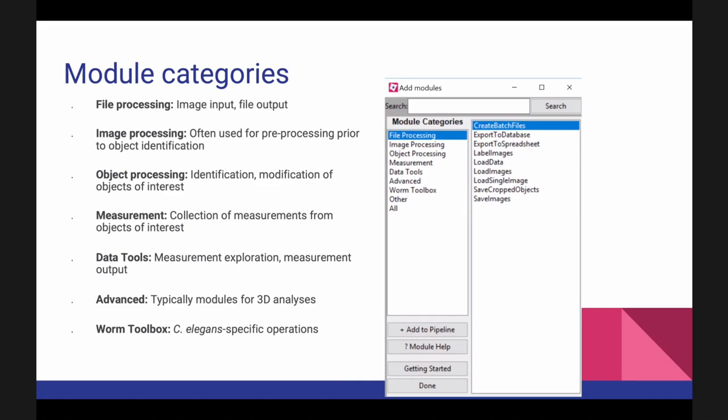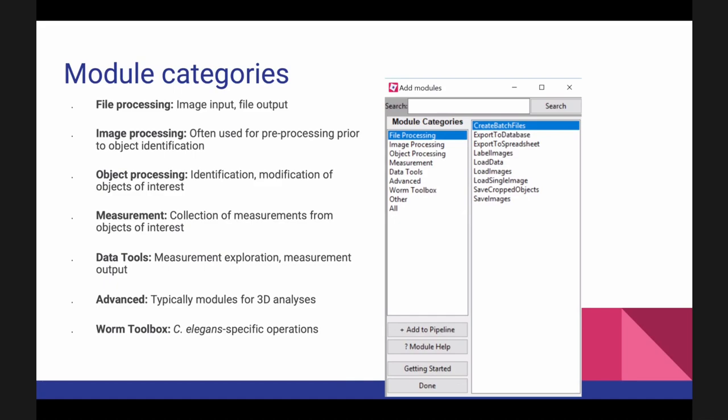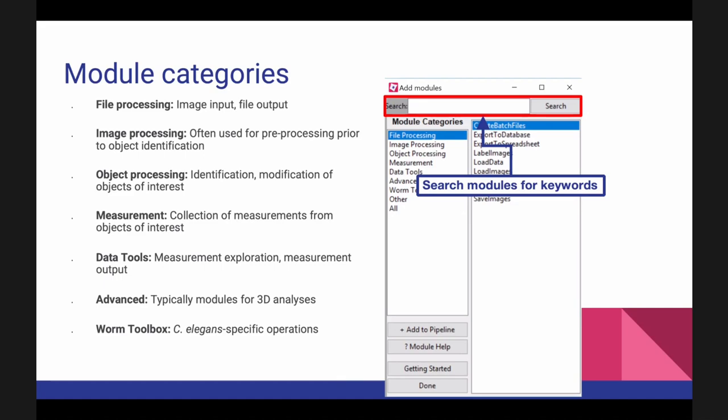CellProfiler has many different kinds of modules: file processing, measurement, 3D analysis, and even special things for C. elegans researchers. To make this searchable, you can search modules by keywords. For example, if you want to know the size of your cells, search 'size' and you'll find the Measure Object Size and Shape module. If you search a term not in the module name, CellProfiler will also search through the help text of all modules to find what you need.